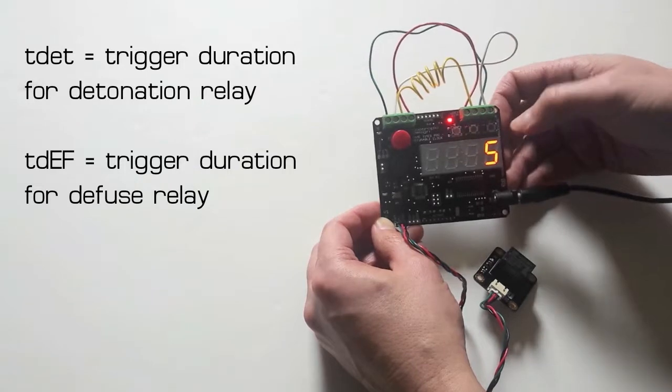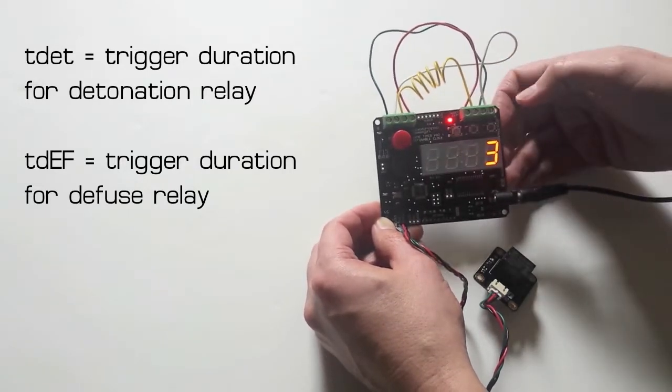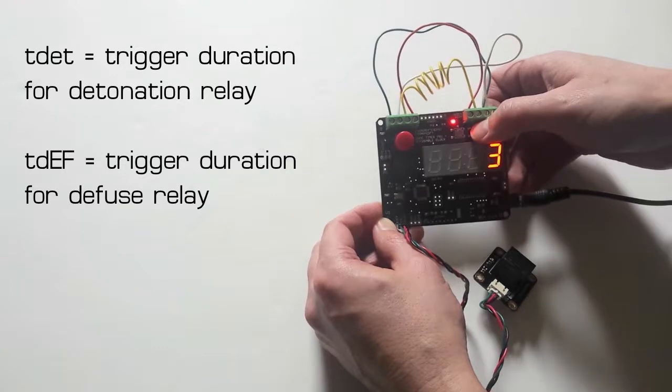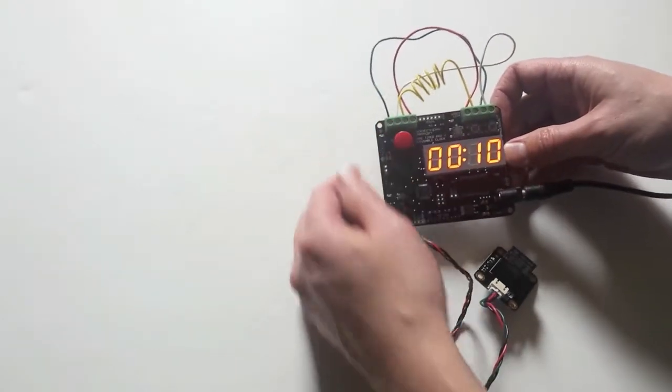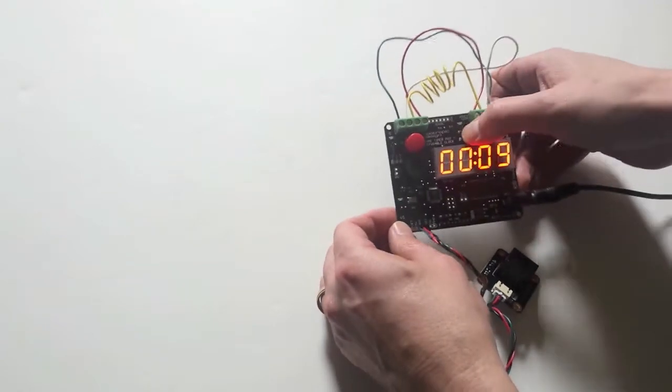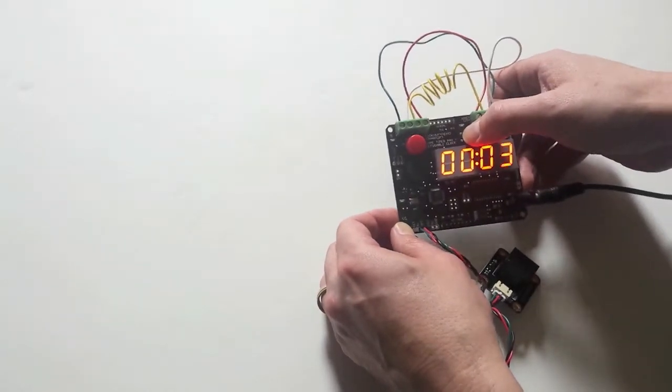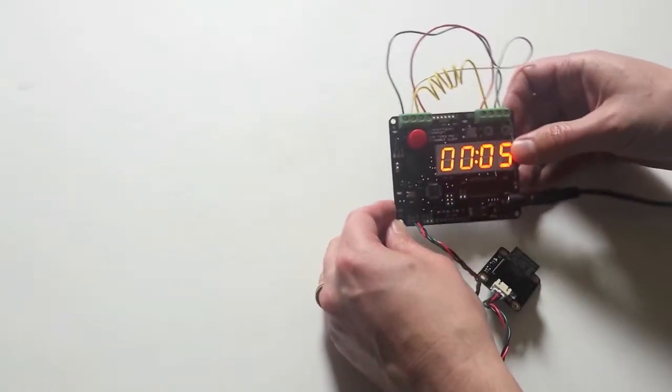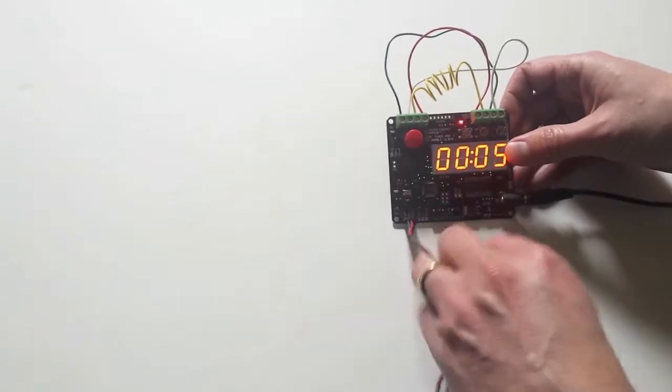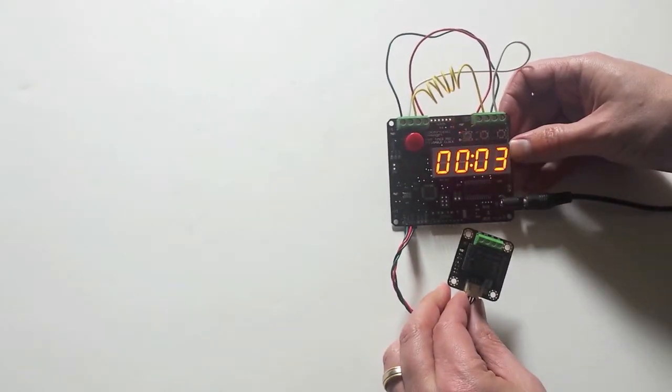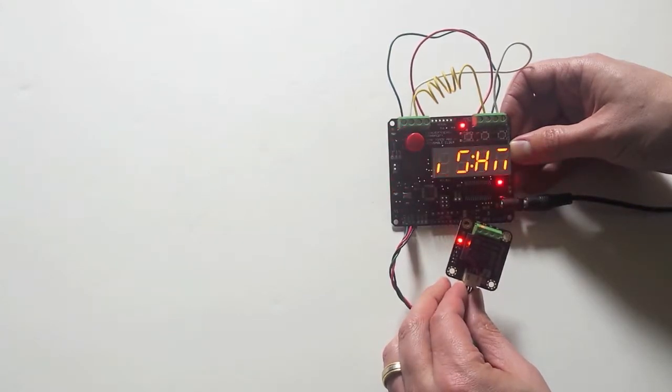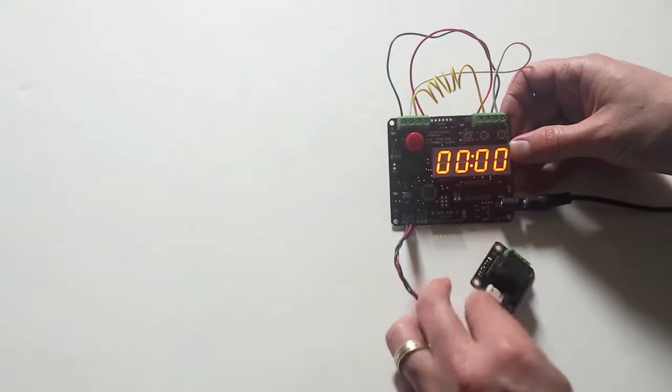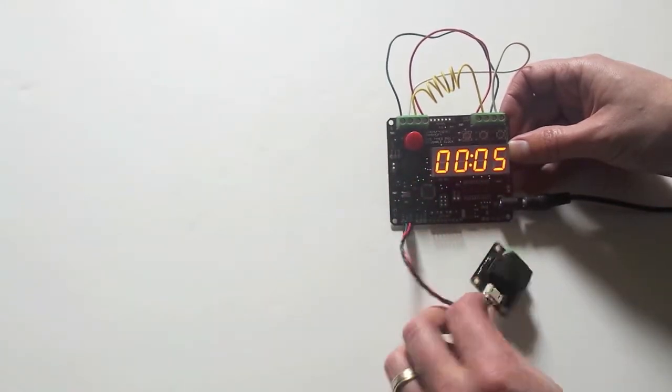The default is five seconds, so let's just change that. We can set that to whatever we like, let's say three seconds. Now we'll exit and when we run our countdown, I'll start it at five seconds. You'll see that the relay is triggered for three seconds, and that's all there is to it.